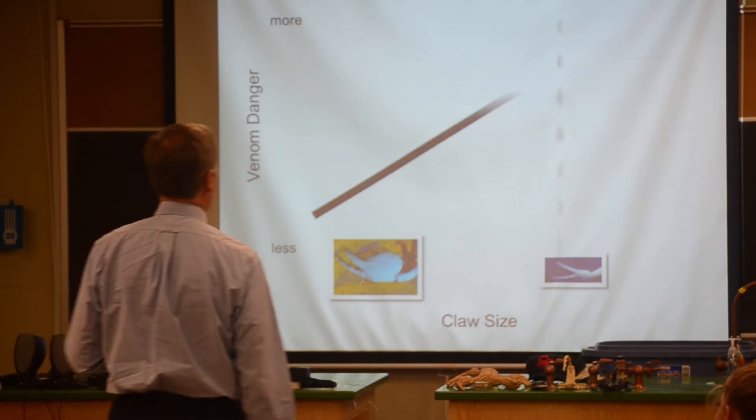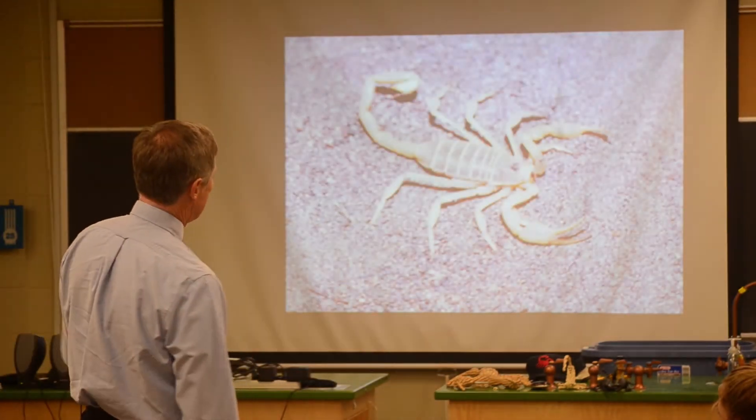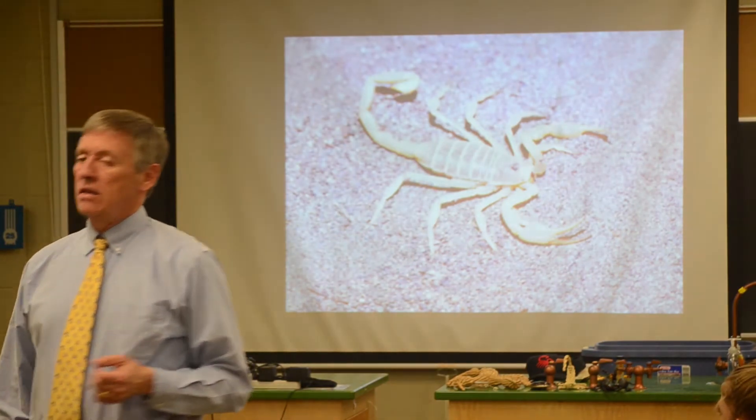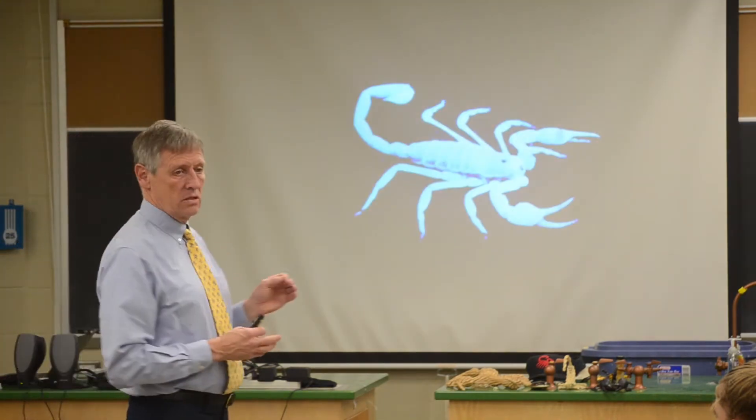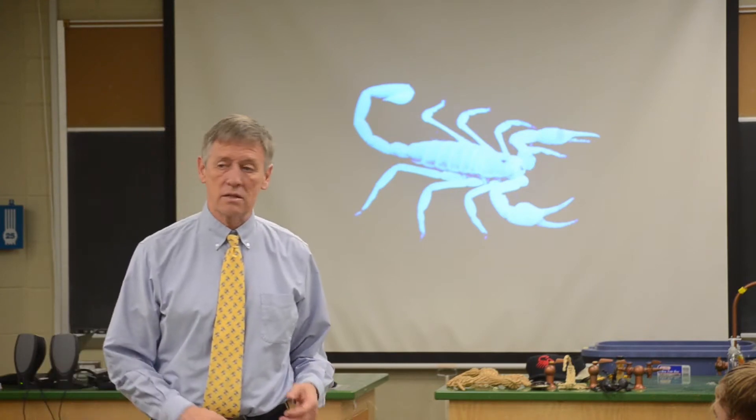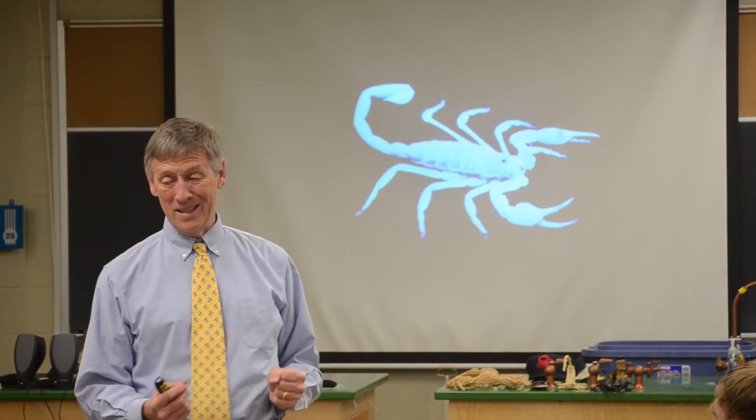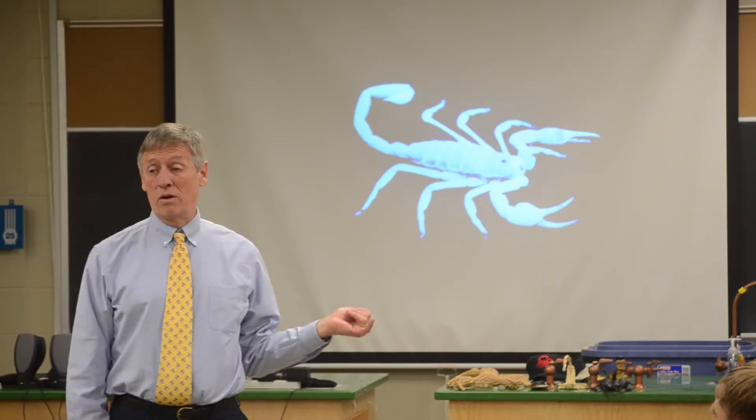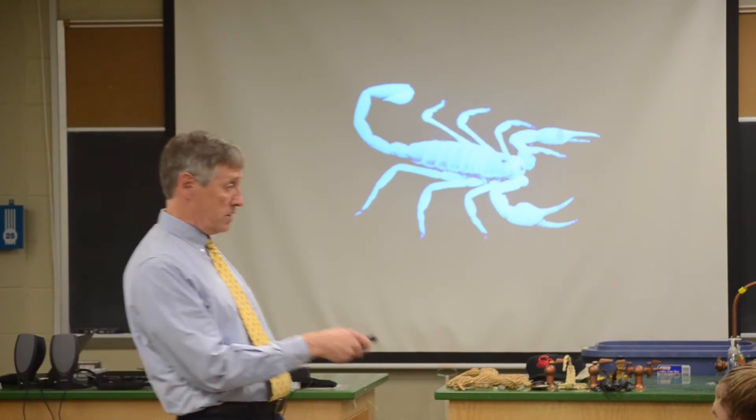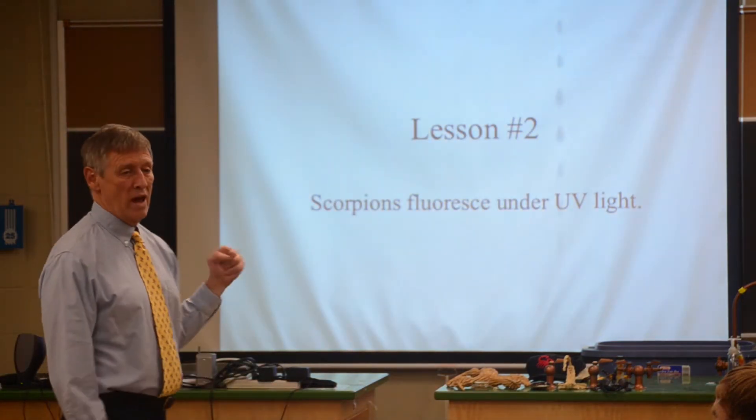And again, roughly the rule of thumb is the smaller the claw, the more strong the venom. Not always, but that's sort of a rough rule of thumb. Now this is the next really cool thing about scorpions you have to know. This is a scorpion I filmed under room light, and then when I turn off the light and turn on a black light, an ultraviolet light, you see this. And I'll show this to you. Their entire body fluoresces this amazing blue-green color under black light. No one's really sure why this is. There are some hypotheses, and we've got some ideas ourselves, and I can talk about that later if you'd like.